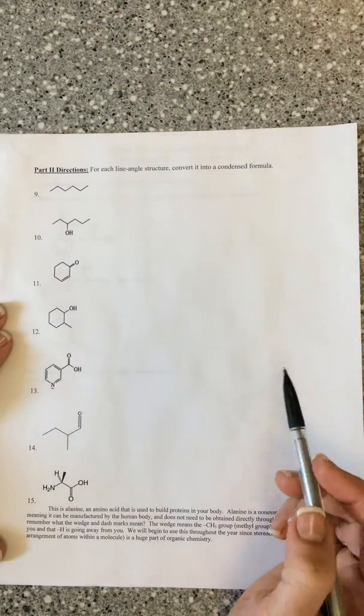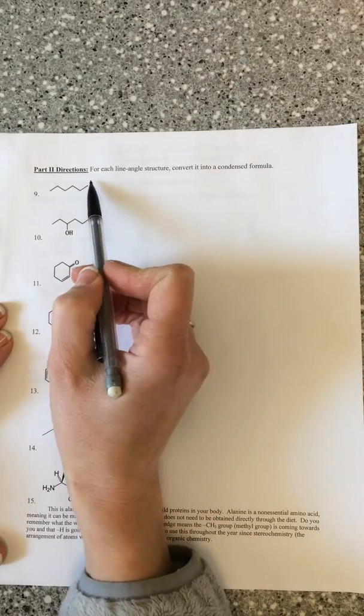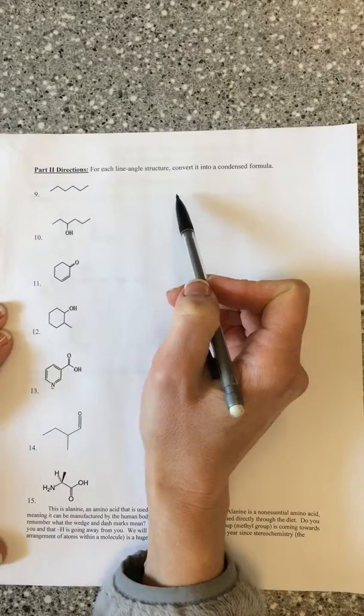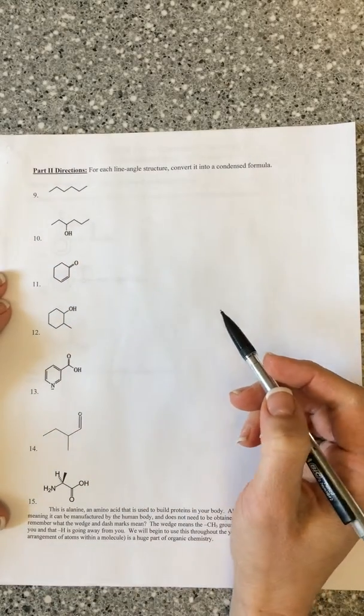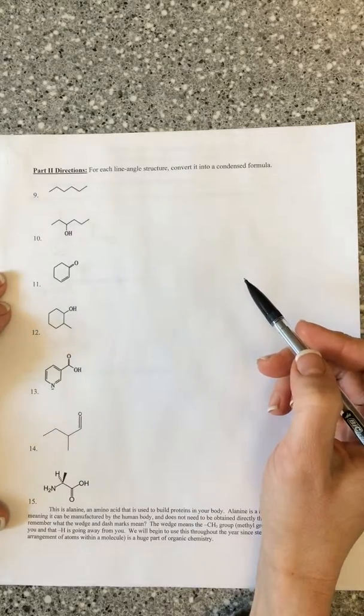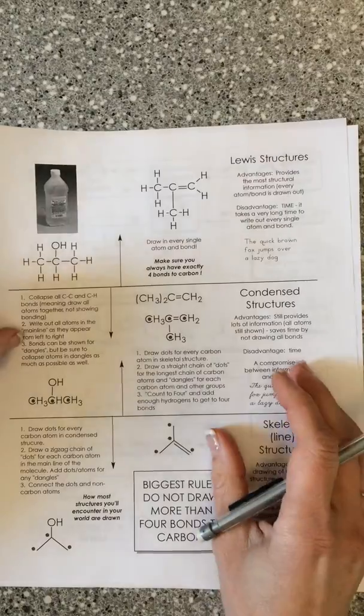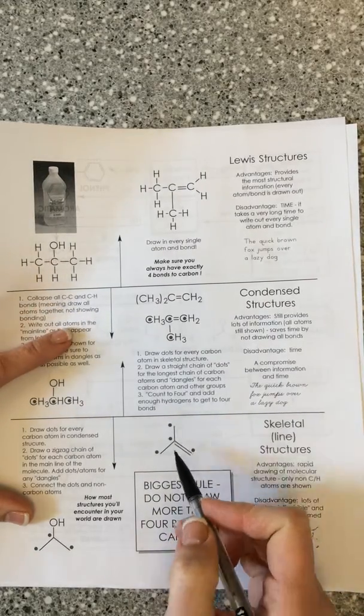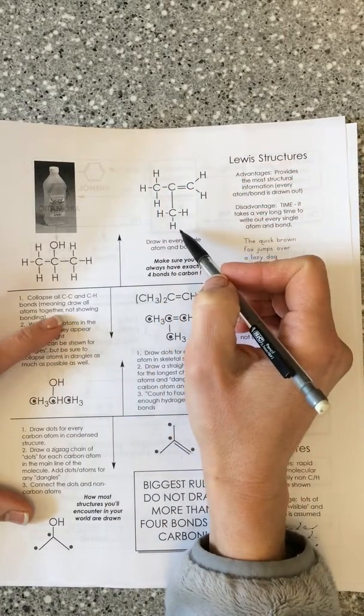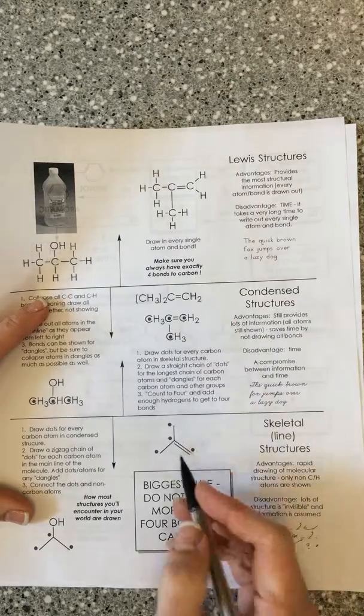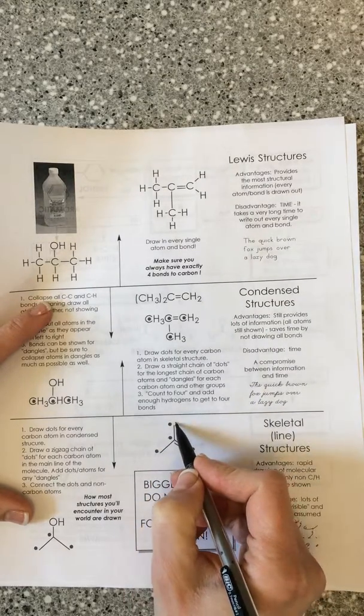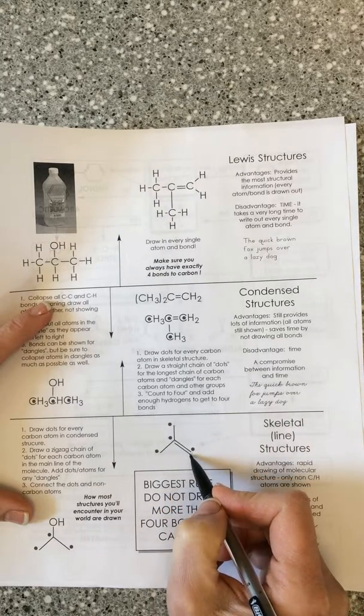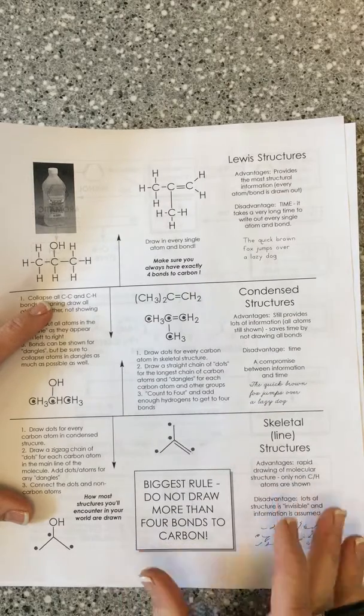So our next part of this practice is being able to convert a skeletal structure into a condensed formula. This is not something that we generally do in practice, but we want to practice this so it is something that you can actually visualize in your head. We're going to be taking structures that are drawn in this shorthand notation and being able to visually see how many atoms are bonded there.